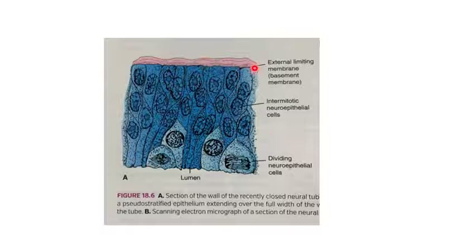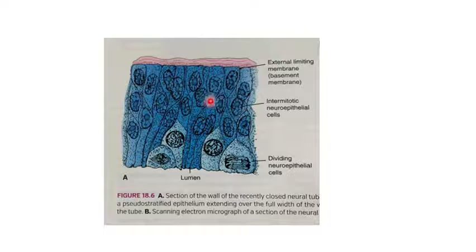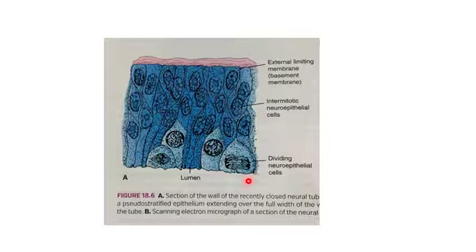The diagram shows the lumen of the neural tube lined by pseudostratified epithelium. The mantle layer mainly consists of neuroblast cells which form neurons. Neurofibers arising from the nerve cells form the marginal layer. There are two longitudinal grooves appearing in the central canal which divide the wall of the neural tube into ventral thickenings (basal plates) and dorsal thickenings (alar plates). The roof and floor plates are thin and do not contain neurons.